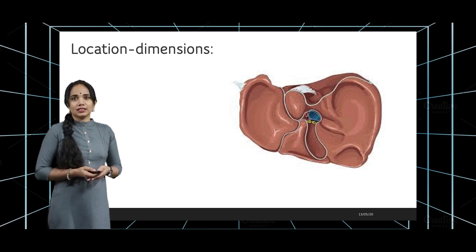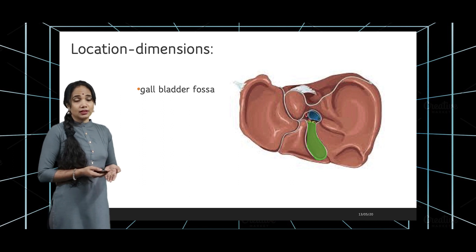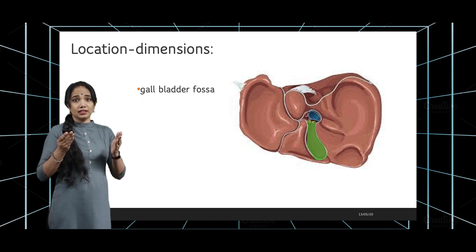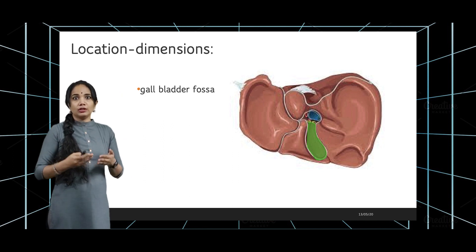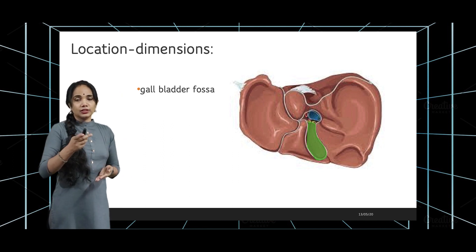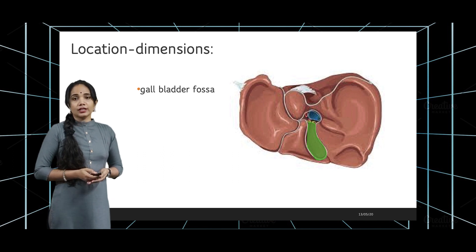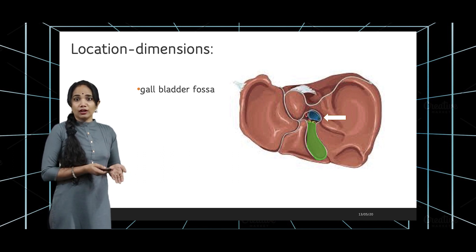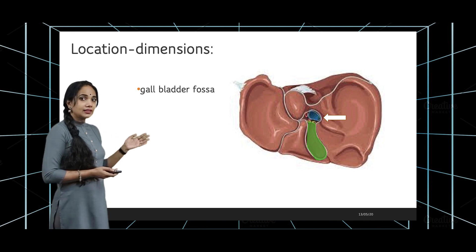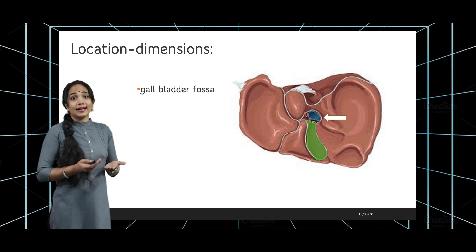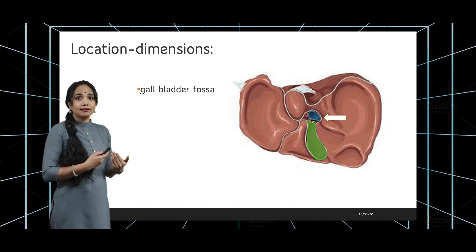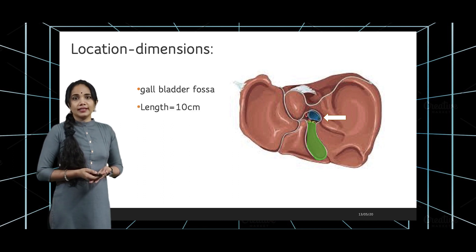The gallbladder is located in something called the gallbladder fossa, which is on the base of the liver. This is the liver from the under surface — you're looking up at it from below. The gallbladder fossa opens onto the right end of the porta hepatis, which is like the hilum of the liver where structures enter as well as leave.